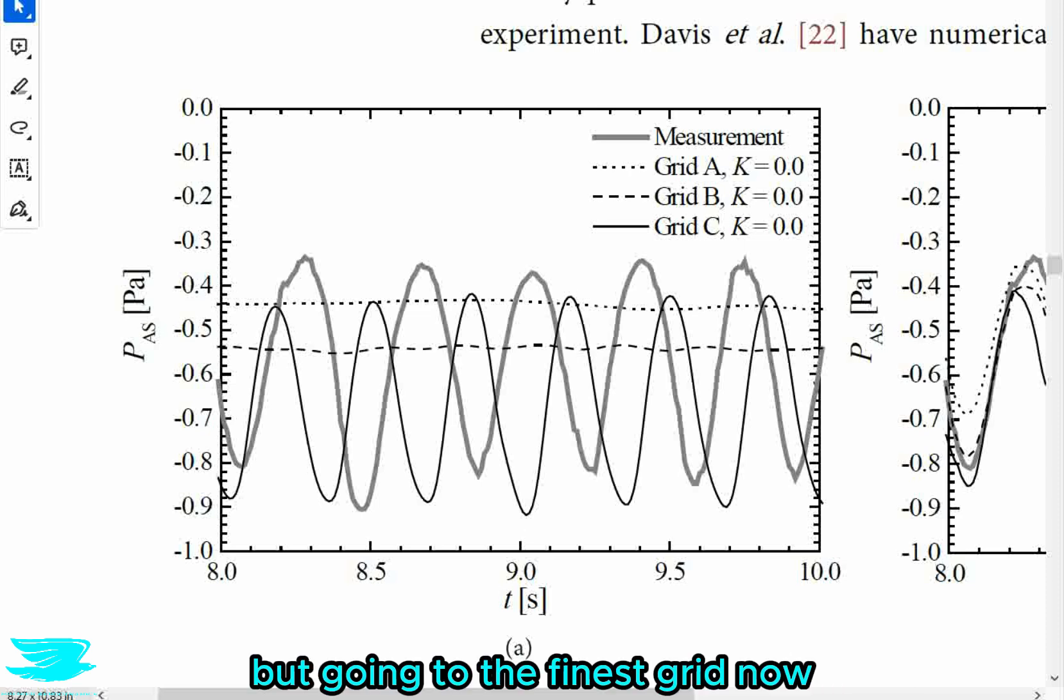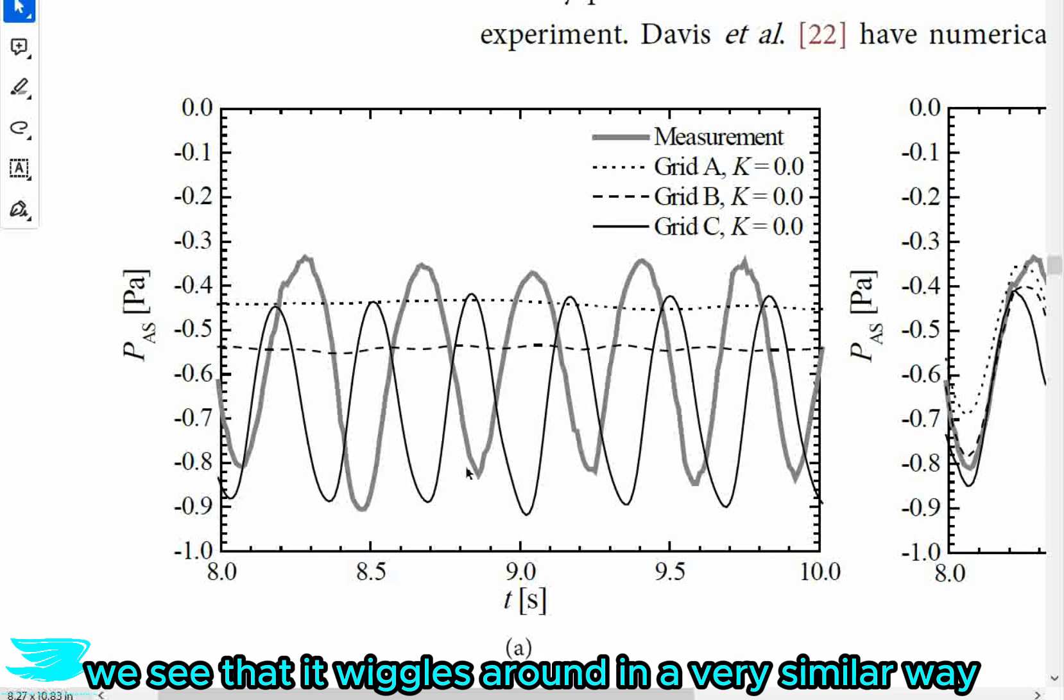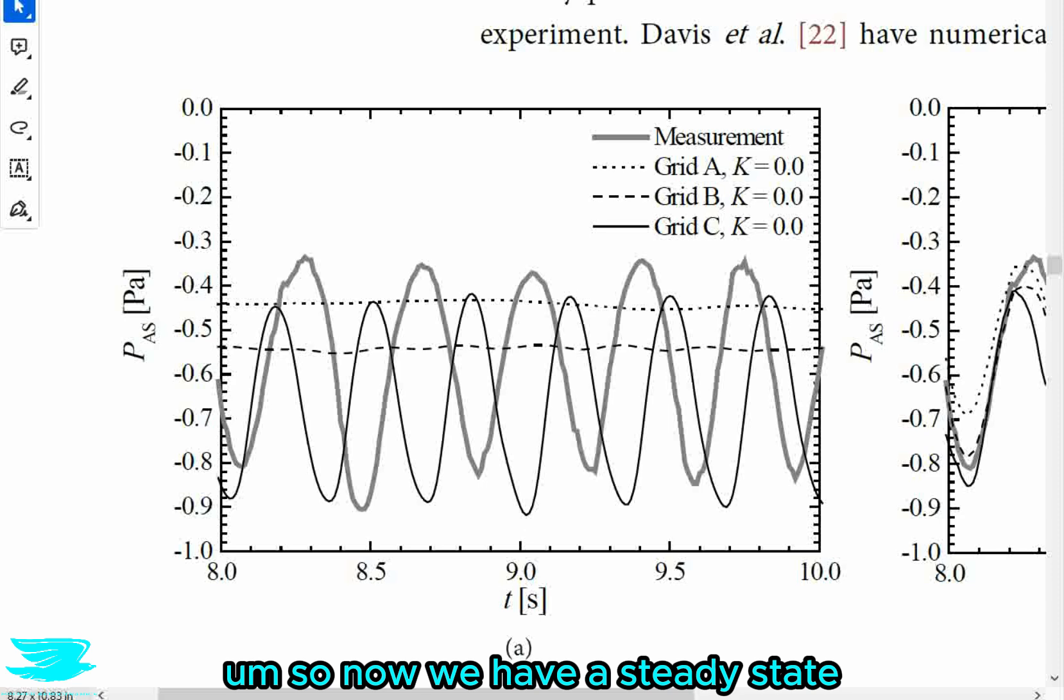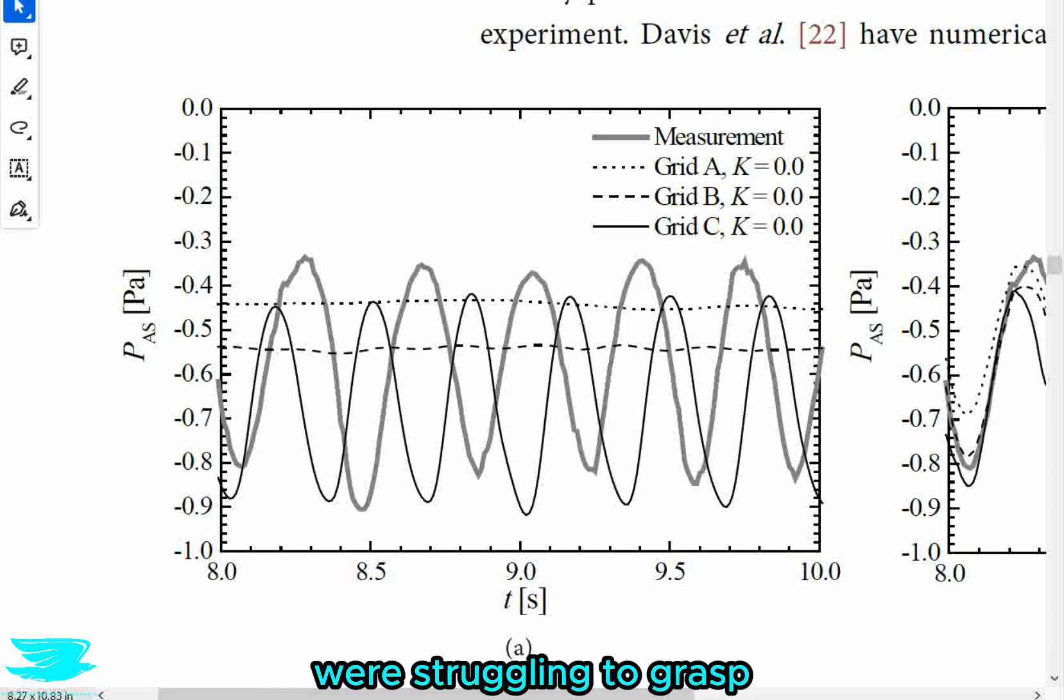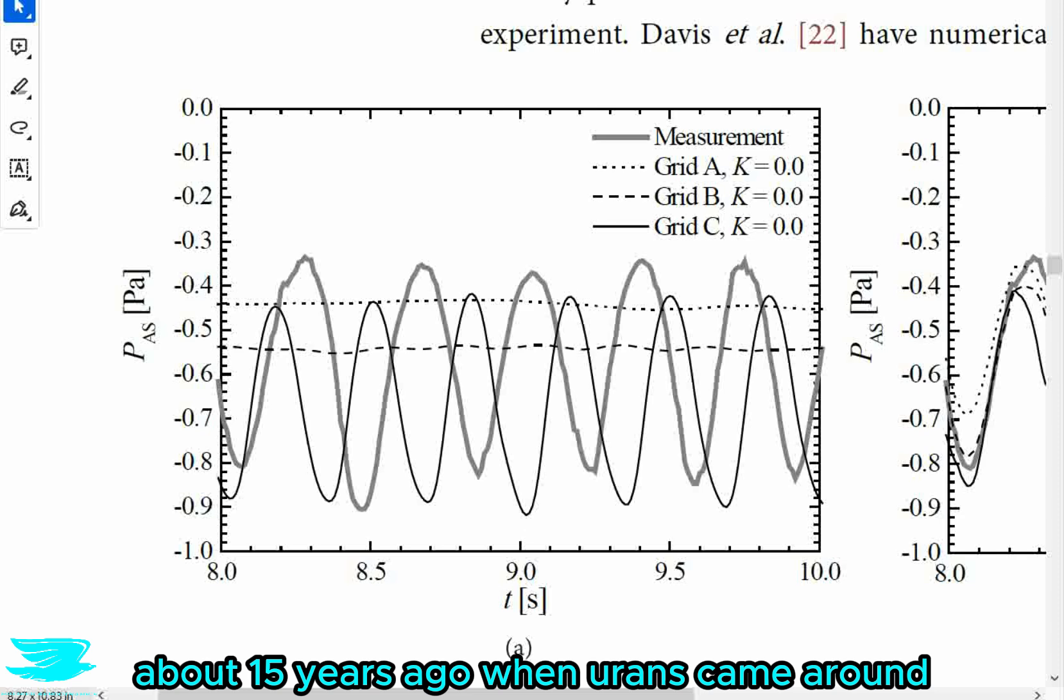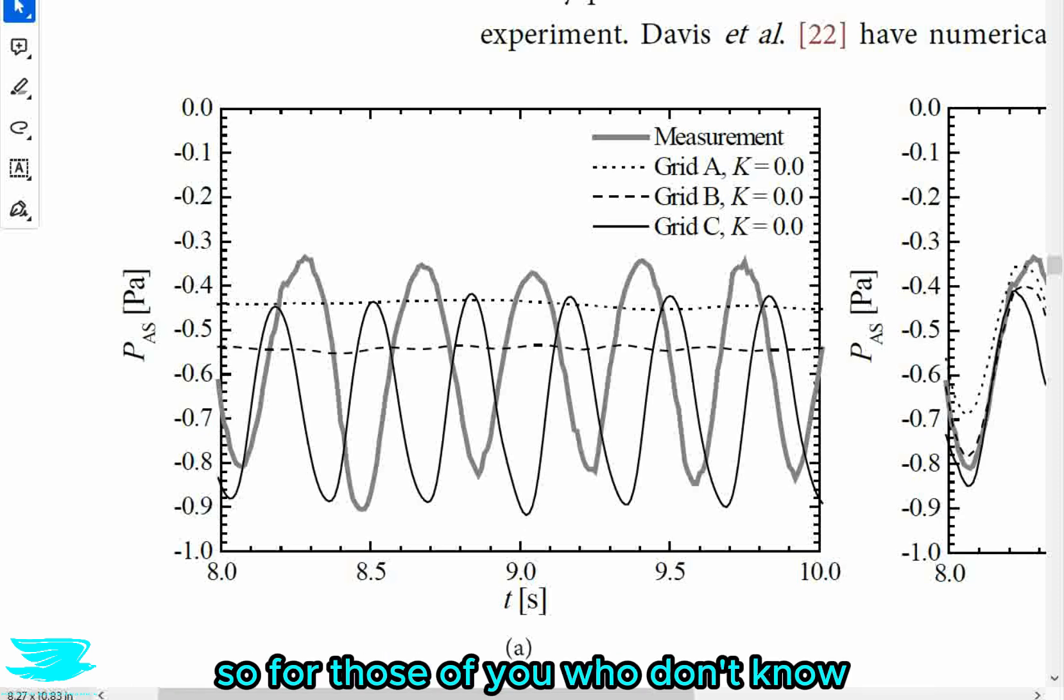And obviously, these two grids don't give results even close to the experimental results, because the transients versus the steady state. But going to the finest grid now, grid C, which is this thin black line, we see that it wiggles around in a very similar way as we get from the experiments, it fluctuates. So now we have a steady state CFD simulation that is exhibiting a transient phenomenon. That doesn't make sense, because in the RANS equations, there is no time component. So how can you get fluctuations in time?